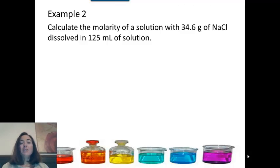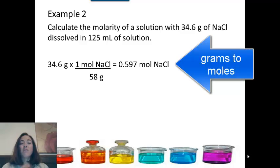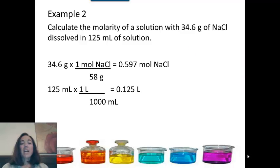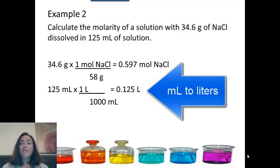Here's the second example. What is the molarity of a solution if you have 34.6 grams of salt dissolved in 125 milliliters of solution? So the first step is to convert grams to moles. Divide by the molar mass of sodium chloride, you get 0.597 moles. Now we need to make liters. Take 125 milliliters and divide it by 1000 to get 0.125 liters.